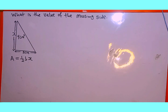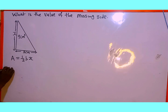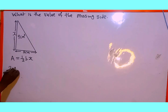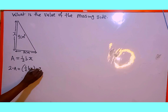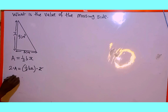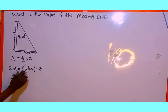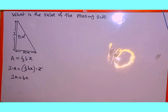The next thing we are going to do is make x the subject of the formula before we substitute, because we are looking for the value of x. We multiply both sides by the LCM, which is 2, since 2 is the only denominator. So two multiplied by A equals one over two times bx multiplied by two, and these twos cancel. Two multiplied by A gives us 2A, which equals bx.